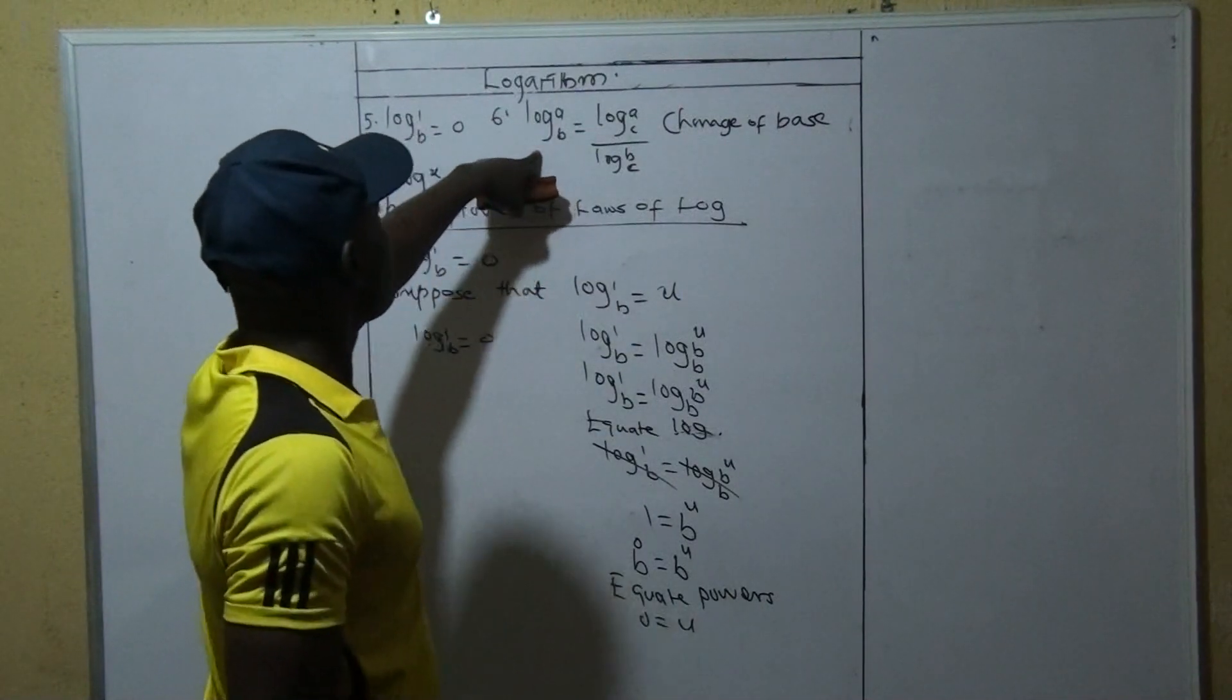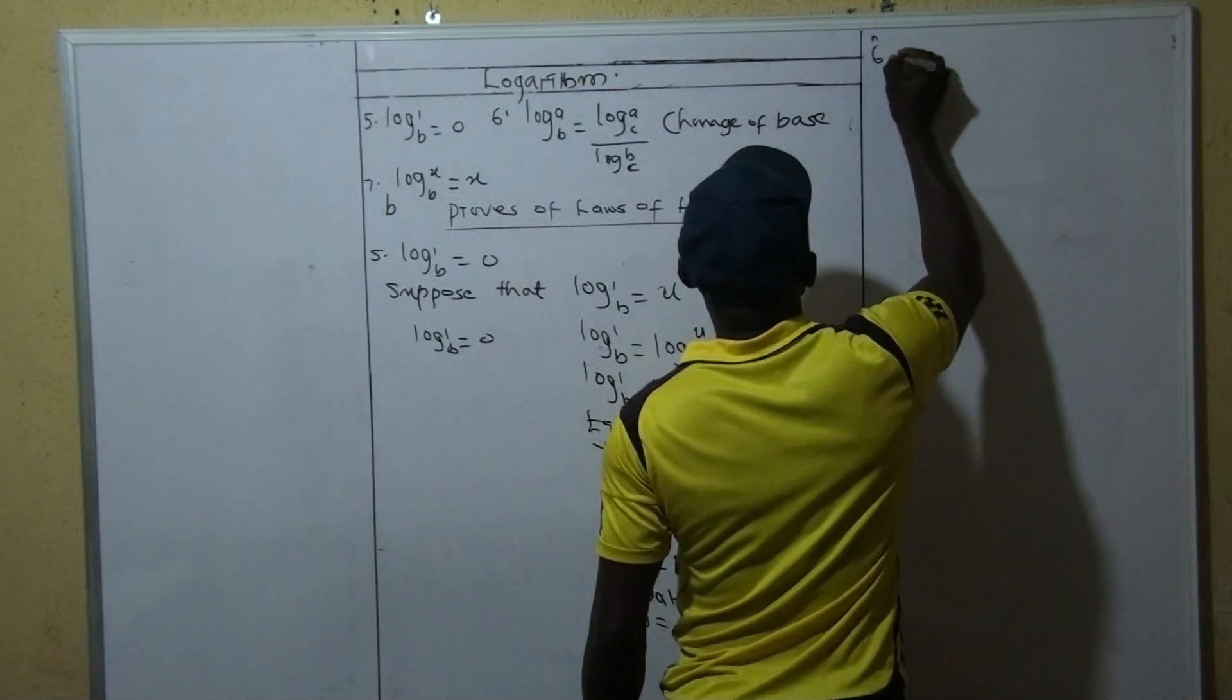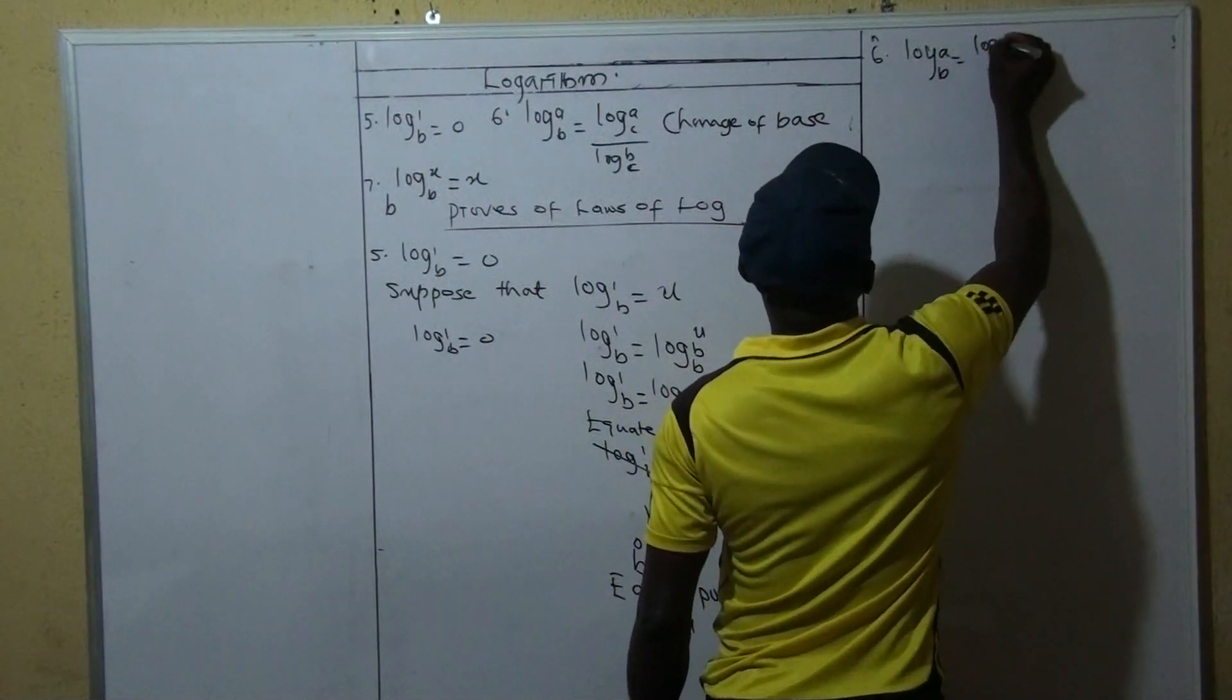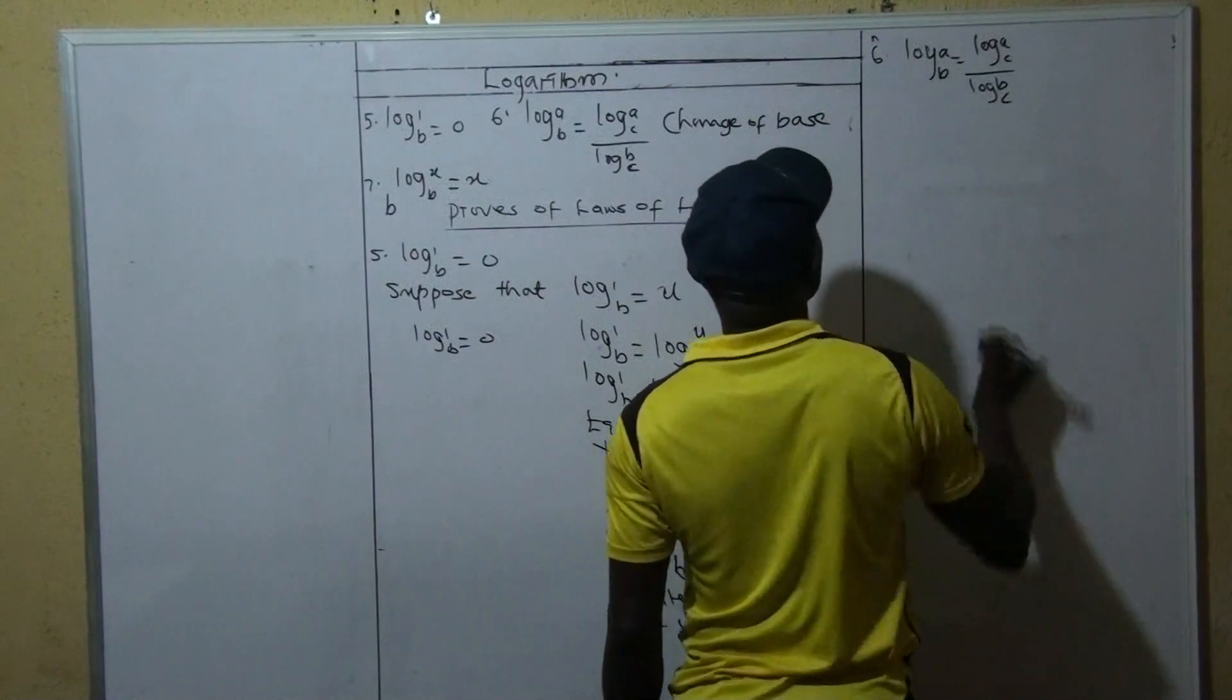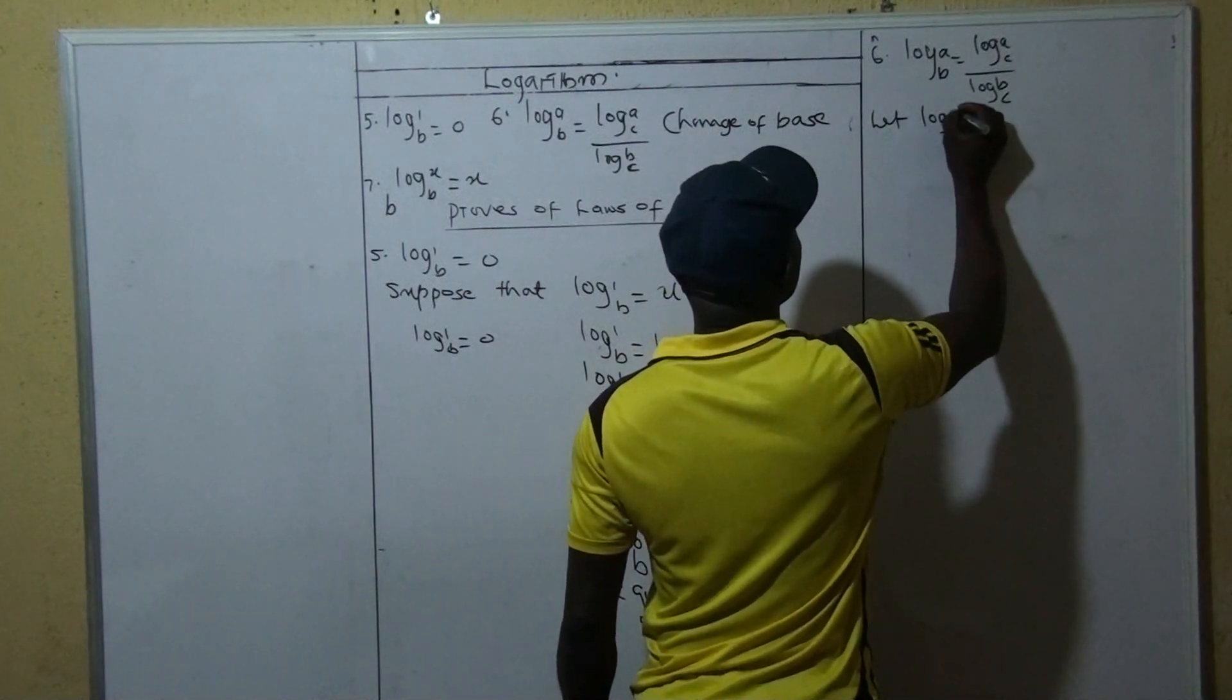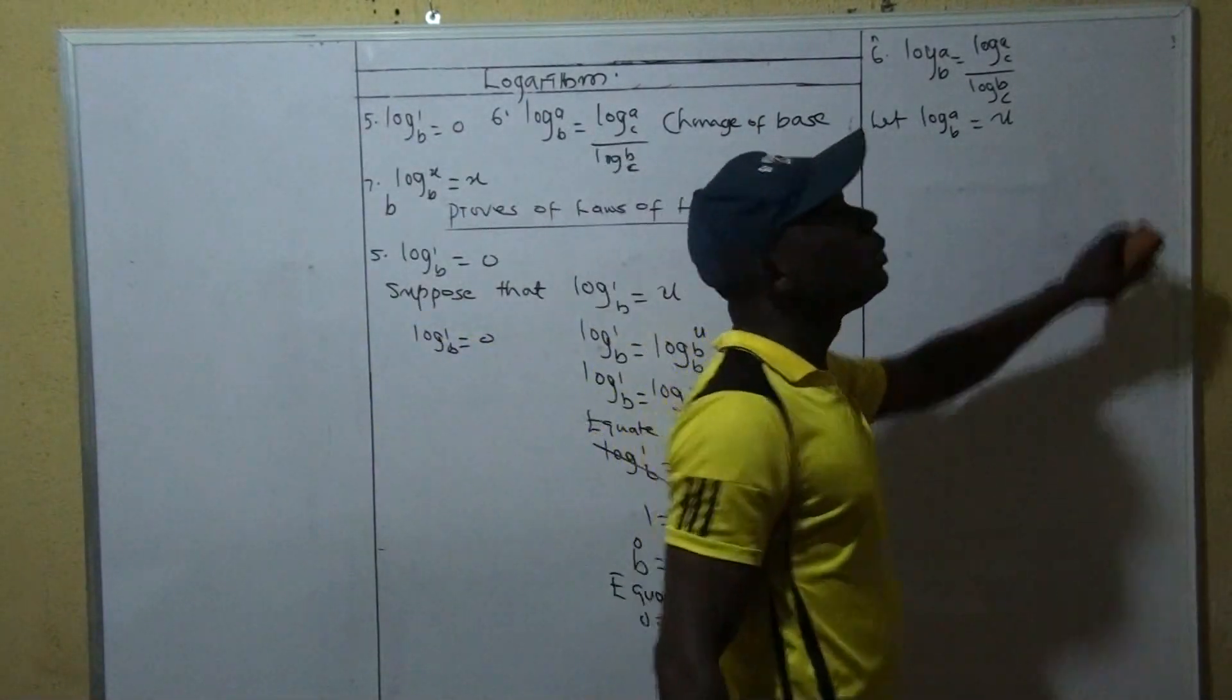So let's go to 6. We say if we have log A to base B is equal to log A to base C over log B to base C. So first, like we said, suppose let's assume log A to base B is equal to, let's assume it is U.